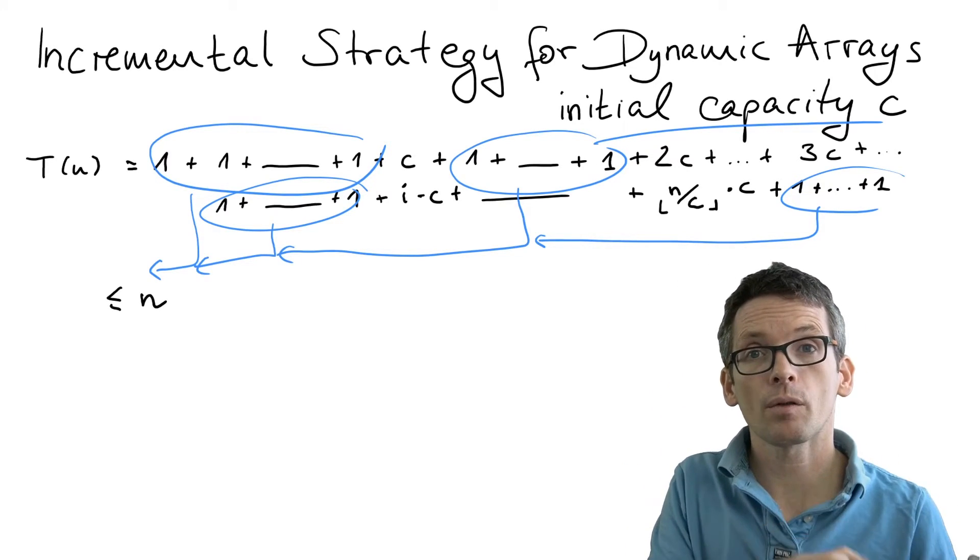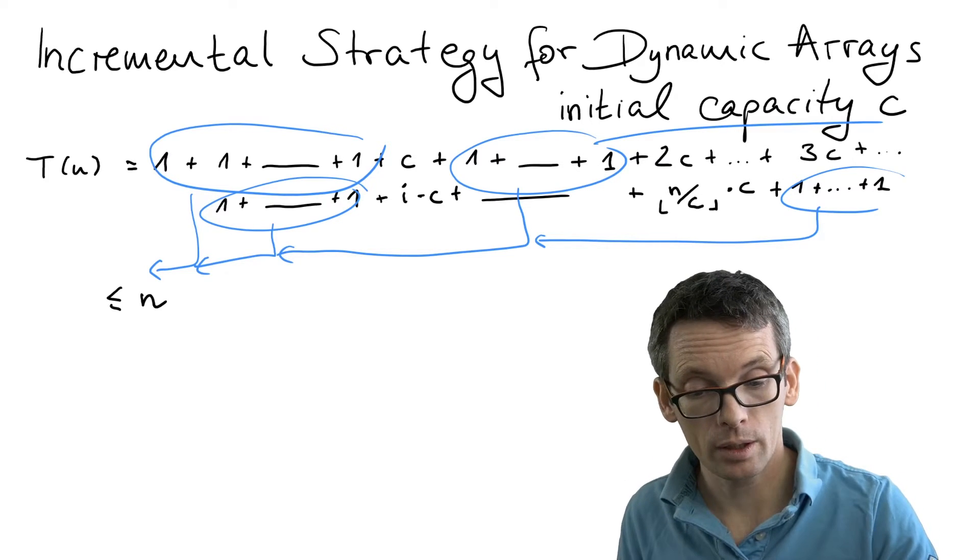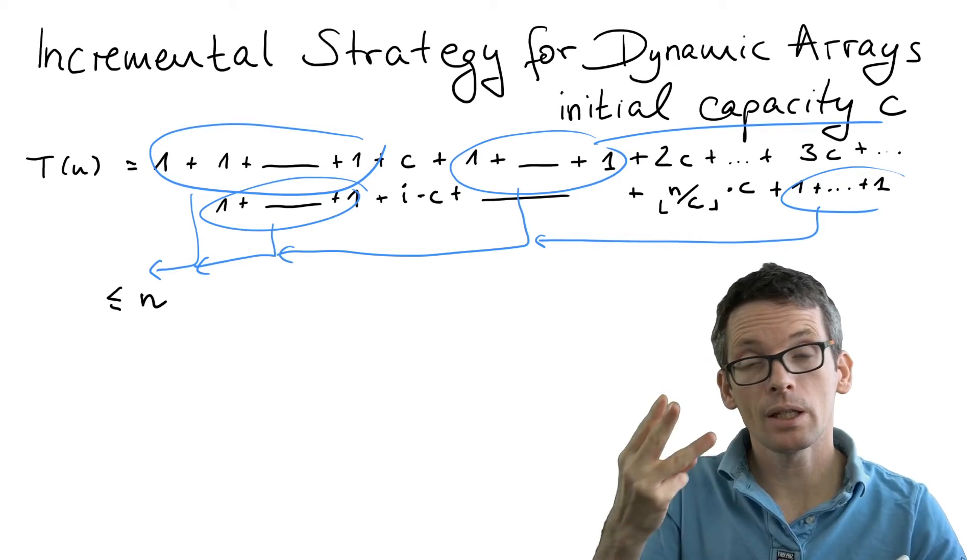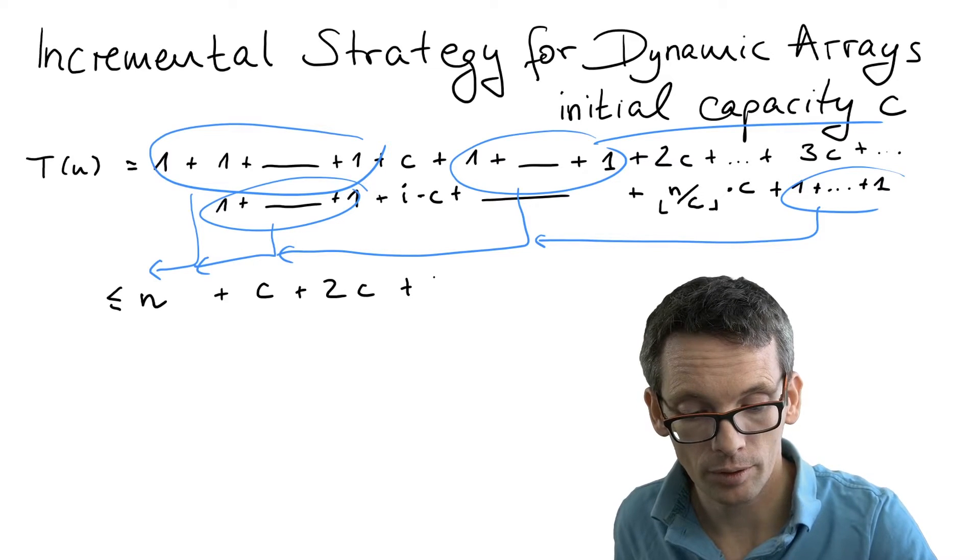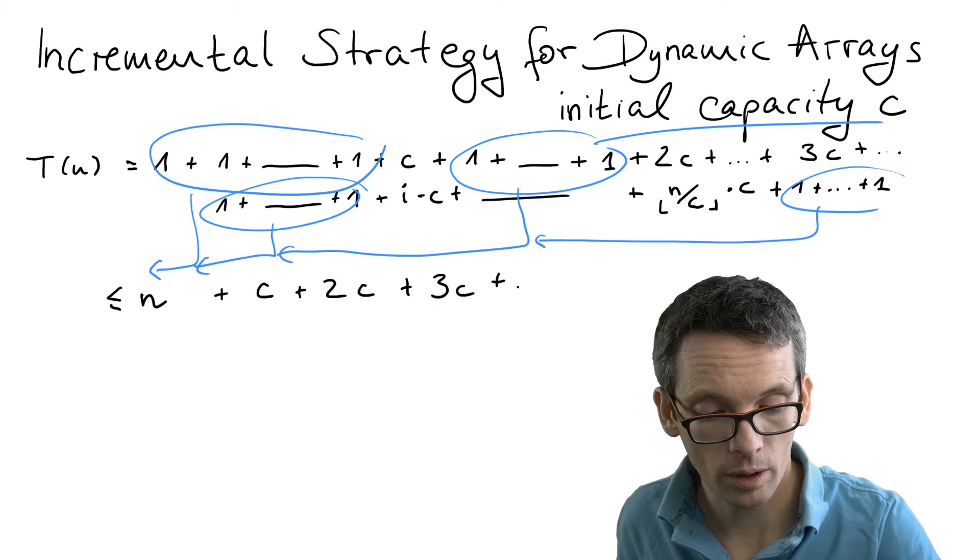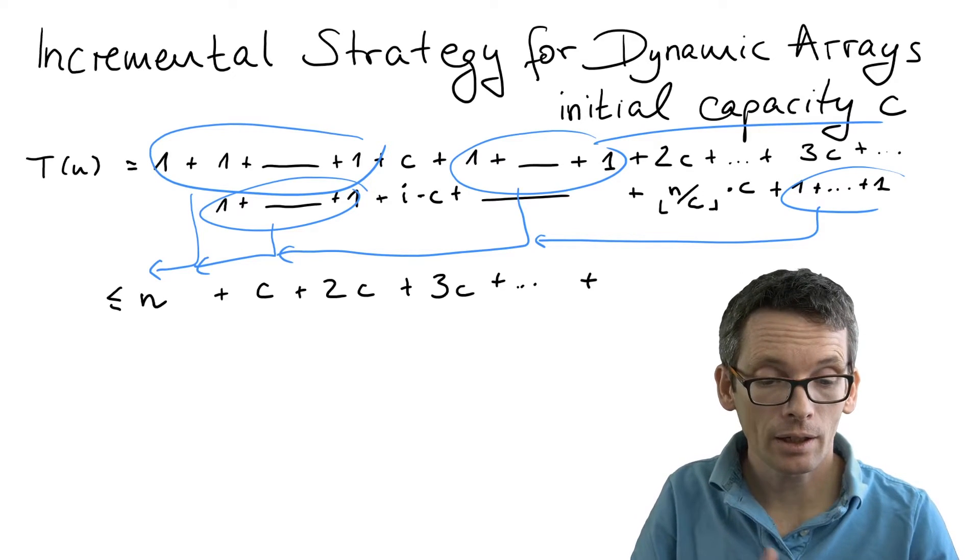Then we still have the term c, 2c, 3c, and so on. So we have c plus 2c plus 3c and so on, and this goes up to n divided by c times c. Now we take the c out of this sum. Then what this gives us is n plus c times...